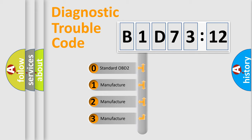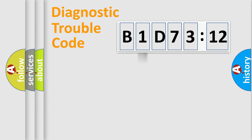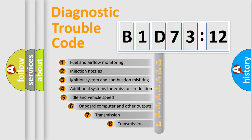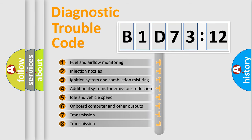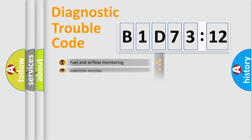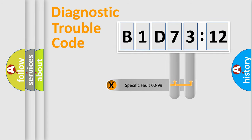If the second character is expressed as zero, it is a standardized error. In the case of numbers 1, 2, or 3, it is a manufacturer-specific error. The third character specifies a subset of errors. The distribution shown is valid only for the standardized DTC code. Only the last two characters define the specific fault of the group.